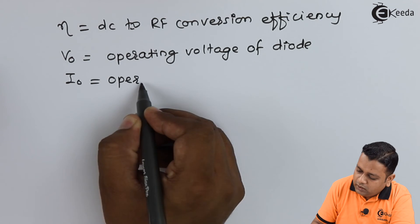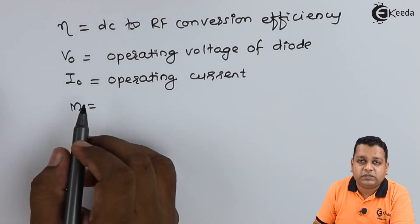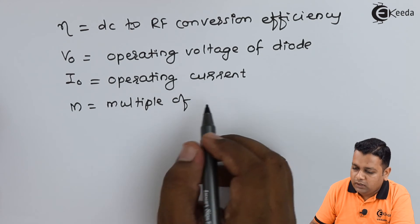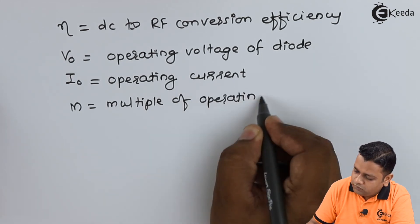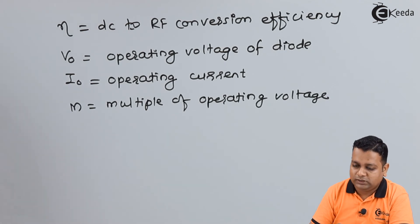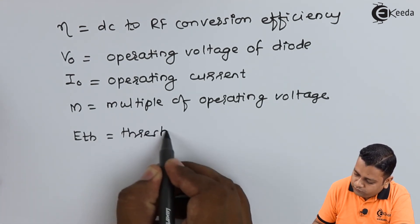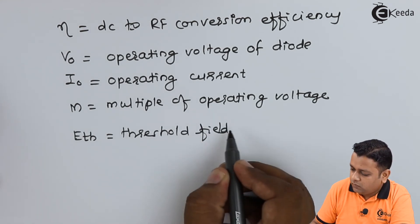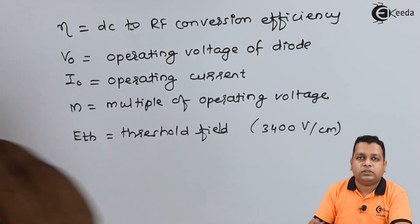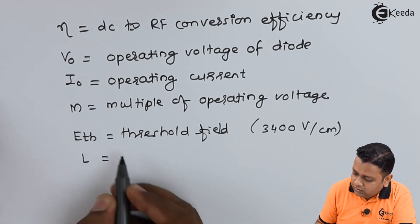Capital M is expressed here, so capital M is called a multiple of operating voltage above the negative resistance threshold. This is the expected case. We have ETH that is the threshold field. Typically the value is 3400 volts per centimeter, or sometimes it is also referred to as 3300 volts per centimeter. Capital L is the device length.